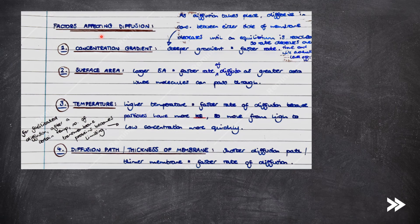So let's have a look at the different factors affecting the rate of diffusion. First of all, we have concentration gradient. The steeper the concentration gradient, the faster the rate of diffusion. However, as diffusion takes place, the difference in concentration between either side of the membrane decreases until an equilibrium is reached. So the rate decreases over time and will eventually level off.